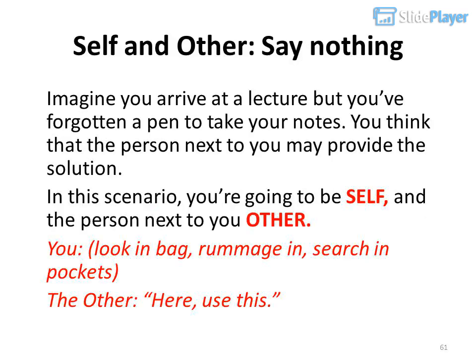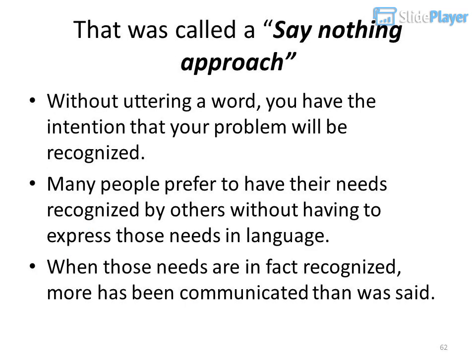Self and Other: Say Nothing. Imagine you arrive at a lecture but you've forgotten a pen to take your notes. You think the person next to you may provide the solution. You look in your bag, rummage, and search in pockets. The other person says 'Here, use this.' That is called a say-nothing approach — without uttering a word, you have the intention that your problem will be recognized. Many people prefer to have their needs recognized by others without having to express those needs in language. When those needs are in fact recognized, more has been communicated than was said.